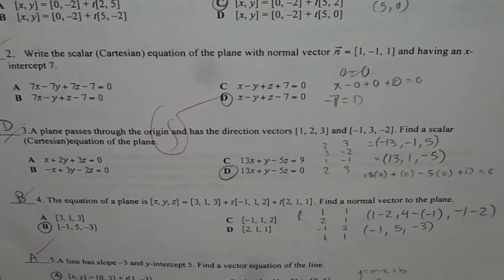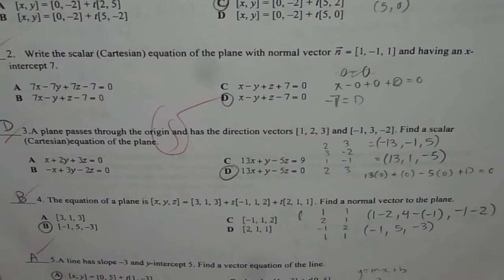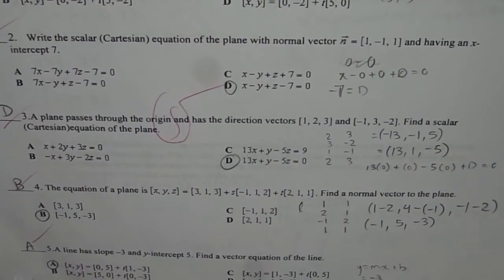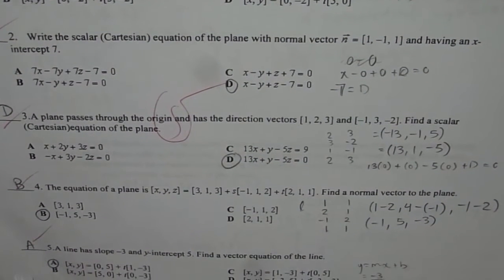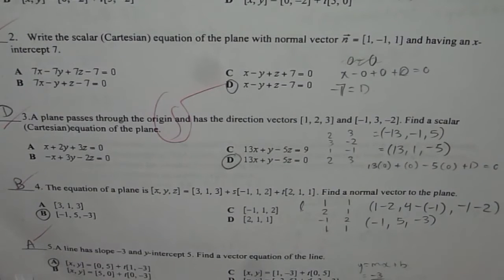Next question is: the equation of the plane x, y, z is 3, 1, 3 plus s times minus 1, 1, 2 plus t times 2, 1, 1. Find a normal vector to the plane. So you need to cross multiply the two direction vectors to get the answer. The last question on this page is: a line has slope of minus 3 and y-intercept of 5. Find a vector equation of the line.